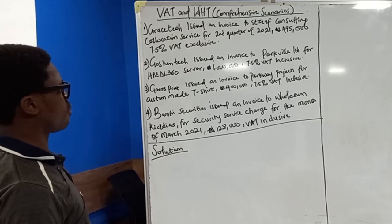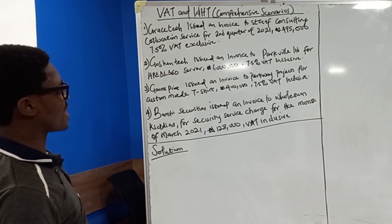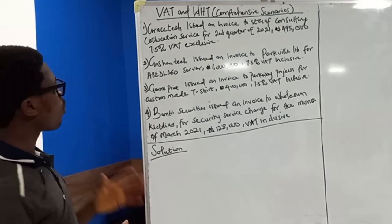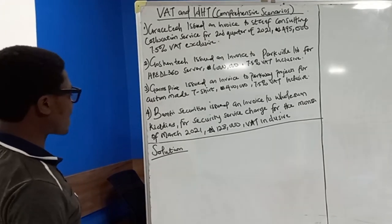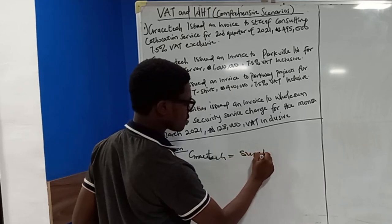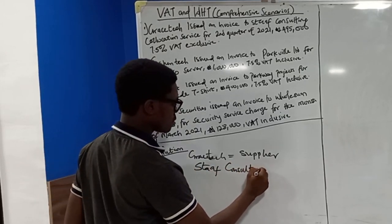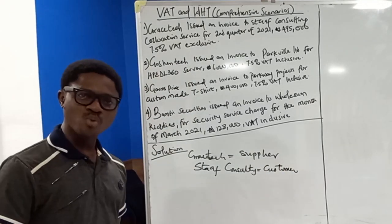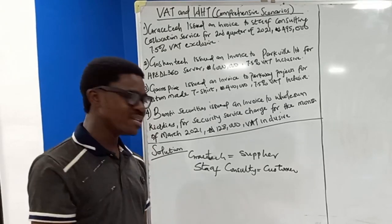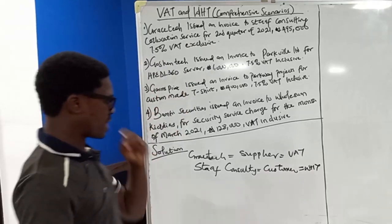The first question: GraceTech issued an invoice to Staff Consulting for relocation service for second quarter 2021, 495,000 naira, 7.5% VAT exclusive. First thing to note here is who is the customer, who is the supplier? GraceTech issued the invoice, that means GraceTech is the supplier while Staff Consulting is the customer. It was mentioned that suppliers are agents of government to charge, collect and remit withholding tax, while customers are agents of government to deduct withholding tax.